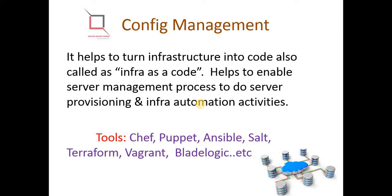Configuration management is one of the very important concepts — it helps turn infrastructure into code, also called infrastructure as code (IaC). It enables server management; for example, Google has a minimum of 10,000 servers, and to install software or manage all those servers you need a configuration management tool. Tools include Chef, Puppet, Ansible, SaltStack, Terraform, Vagrant, and BladeLogic.